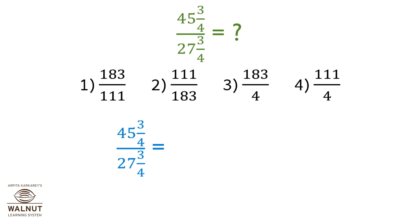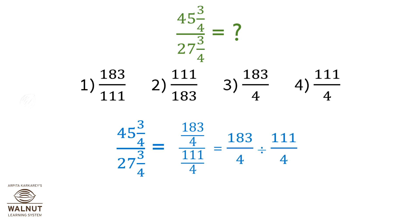45 and 3/4 divided by 27 and 3/4. Converting to improper fractions: 183/4 divided by 111/4, which equals 183/4 multiplied by 4/111.